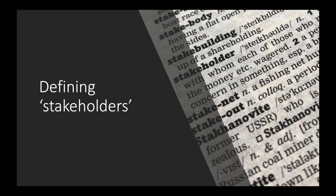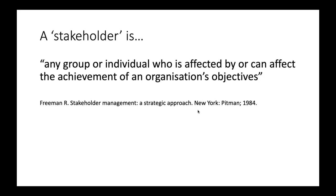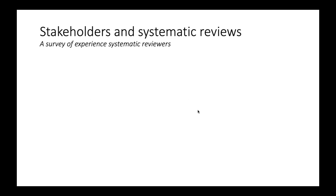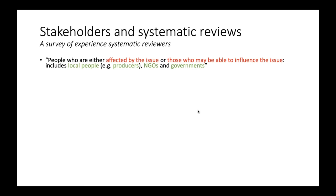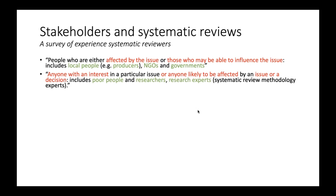Starting with defining stakeholders: probably the most common definition is from Freeman in 1984, which is any group or individual who is affected by or can affect the achievement of an organization's objectives. That's necessarily very broad. We conducted a survey of systematic review experts and the definitions that came up included: people affected by an issue or those who may be able to influence an issue, including local people, producers, NGOs and governments; anyone with an interest in a particular issue or anyone likely to be affected by an issue or a decision, including poor people, researchers, and research methodology experts.